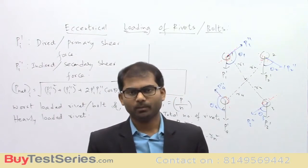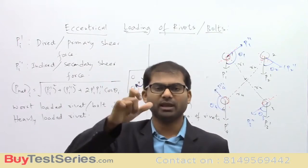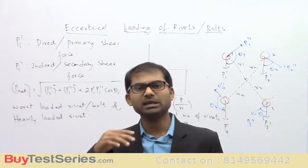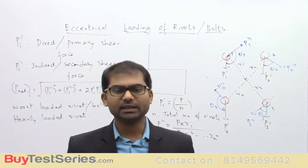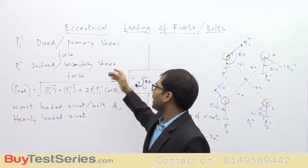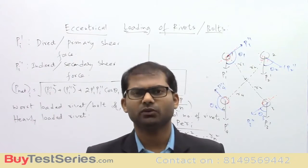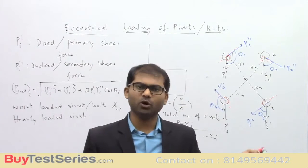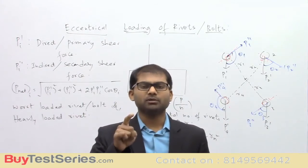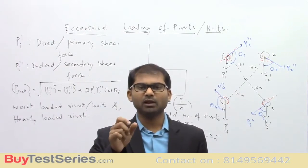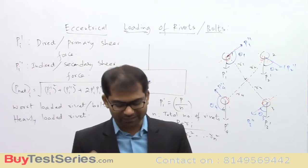In design, we keep P below the limiting value so the joint does not fail. In most GATE questions, you are concerned with finding primary loads, secondary loads, net loads, the load on the worst loaded rivet, or the stress on the worst loaded rivet. This applies whether the question involves rivets or bolts. In every GATE examination over the past four to five years, one question is consistently from this type of eccentric loading. If you are clear on the concept, you can solve it very easily.